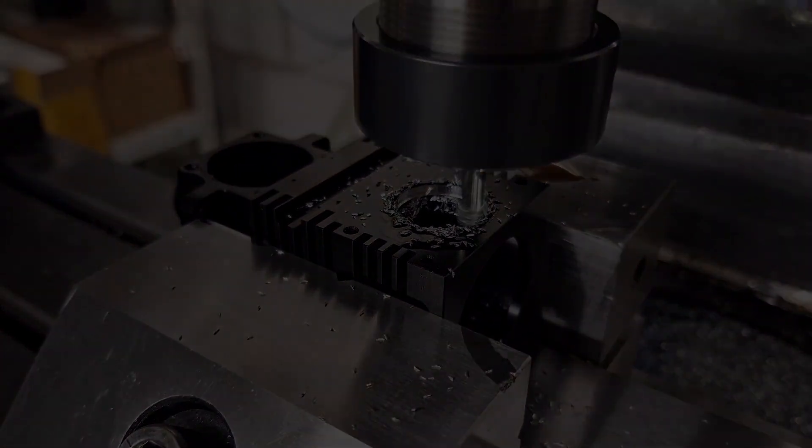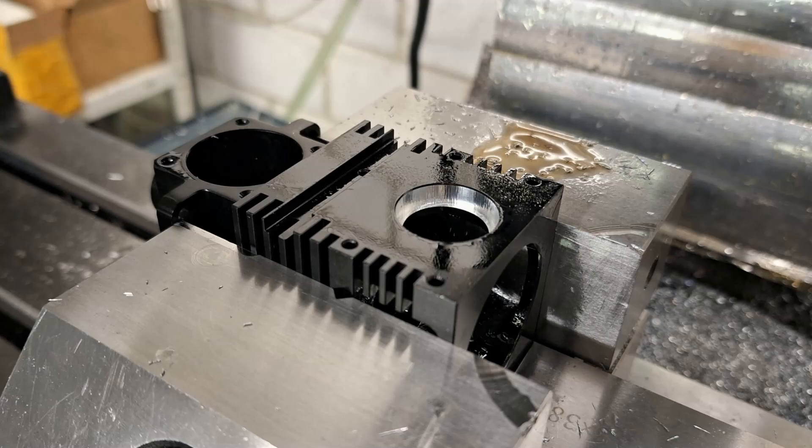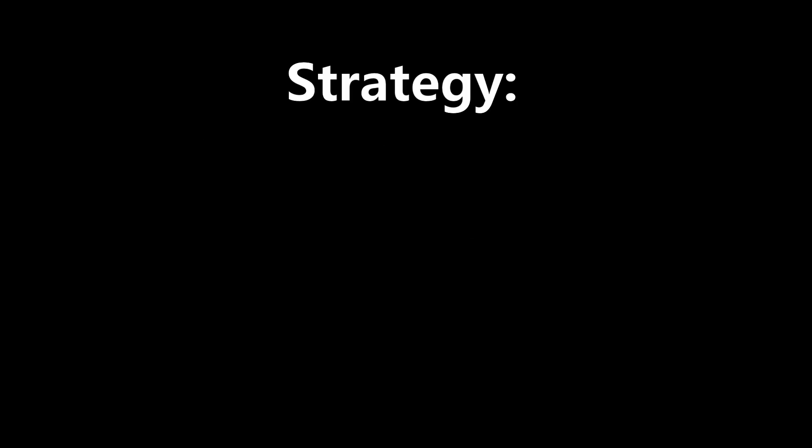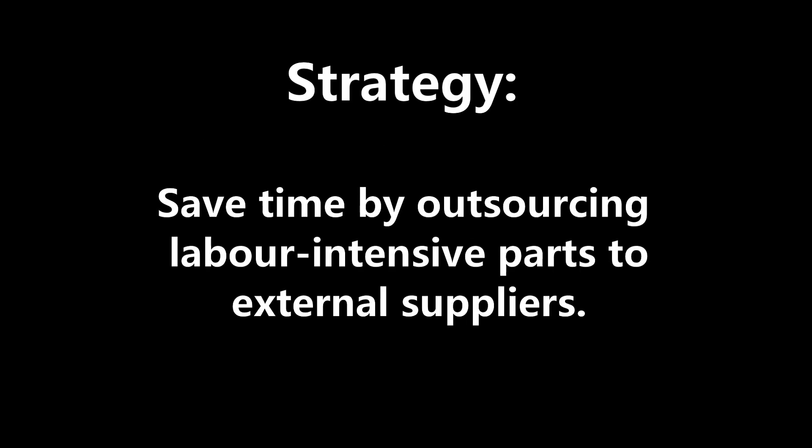As you can see, I have already started manufacturing the parts. But this time, I am pursuing a different strategy. I want to get the parts quickly. For this reason, I have decided to have the raw milled parts manufactured externally.